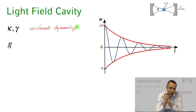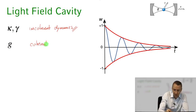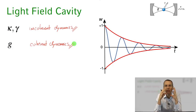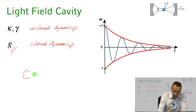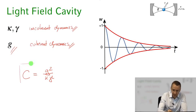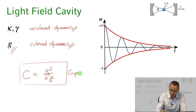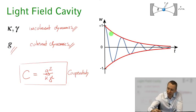G describes the coherent dynamics, and what we want in order to see a strong coupling of the atom to the radiation field — to see beautiful coherent dynamics like vacuum Rabi oscillations — is for G to be much larger than kappa and gamma. This is described by the so-called cooperativity parameter, which is g² over kappa times gamma: the ratio of coherent to incoherent coupling. We want this cooperativity to be as large as possible to see many vacuum Rabi oscillations before they are damped.